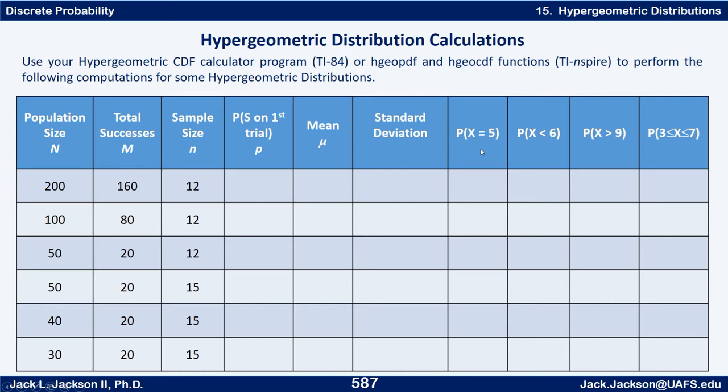And then we can figure some probabilities. The first one is the probability that x equals 5. The next one is the probability that x is less than 6, then the probability that x is greater than 9. And the last one is the probability that x is between 3 and 7 inclusive, where 3 is less than or equal to x which is less than or equal to 7.